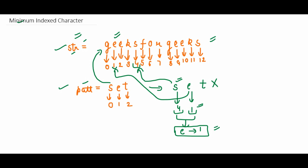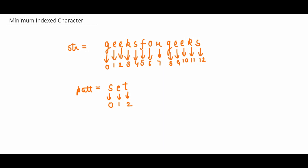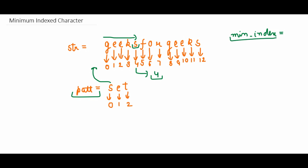Let's see how we can approach this question. The first approach is the brute force approach. What we will do is find each character of pad string in str string one by one, then see which character is present at the minimum index. We start with s, iterating from the start until we reach the first occurrence of s at position four. We take a minimum index variable and update it whenever we find a character.